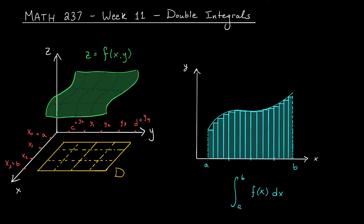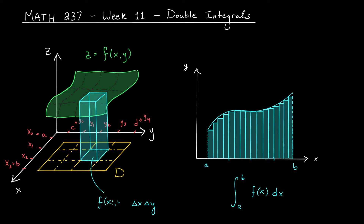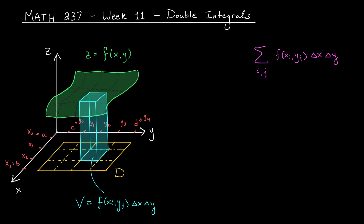This limiting process led to the definition of an integral. In Calc 3, we do the same sort of thing to find the volume. We slice up the domain into tiny pieces and on each piece approximate the volume under our surface using a rectangular box. The area of the base is the change in x times the change in y, and the height is the value of our function at some point x_i, y_j. Adding up these volumes and letting the cuts get finer and finer, we approach the true value of the volume — and this is what we define to be the double integral of f throughout the region D.